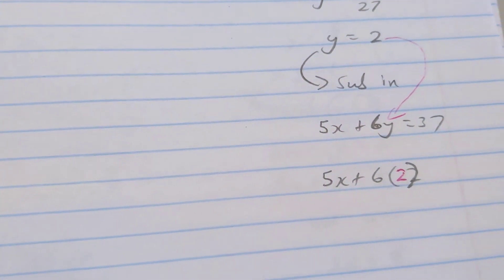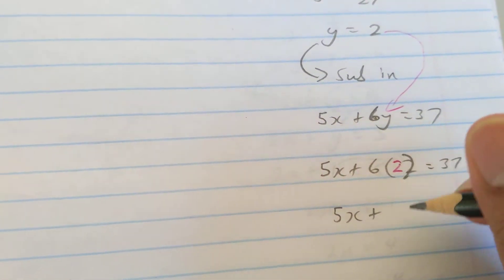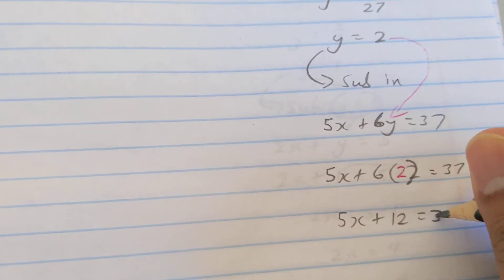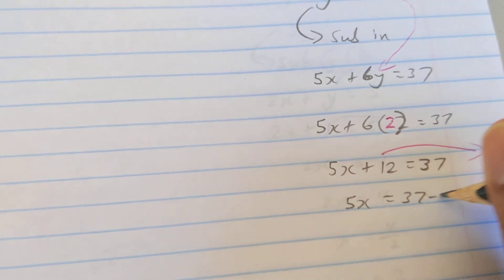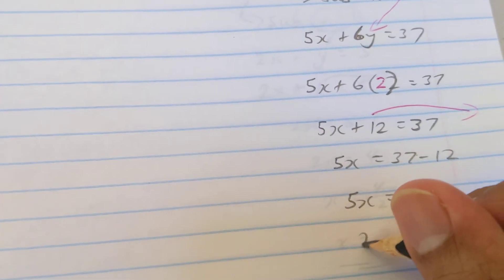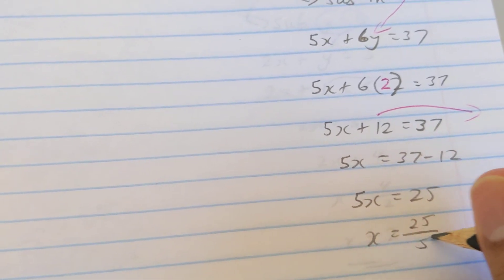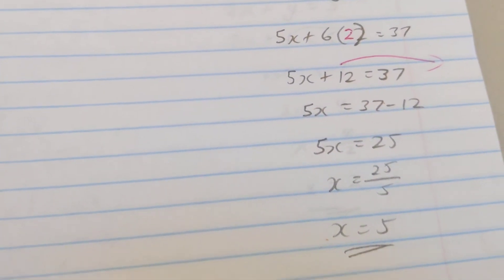So 5x plus 6 times 2 is 12. I want all the letters on one side, all the numbers on one side, so that 12 is going to carry across. When that 12 carries across, that plus 12 is going to change to minus 12. So I'm going to get 5x is equal to 25. So x will be 25 over 5, x is 5.